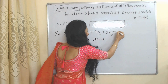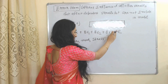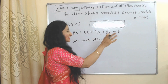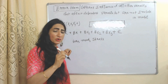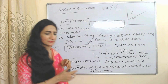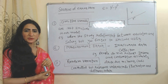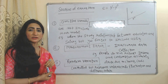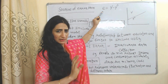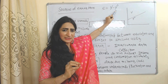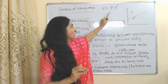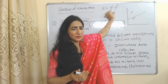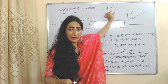The error term E is added to the model equation. The error term is the difference between the estimated value of the dependent variable and the actual value of the dependent variable. Here, E is the error term, Y-hat is the estimated value of the dependent variable, and Y is the actual value of the dependent variable. This difference between the estimated and actual value is called the error.